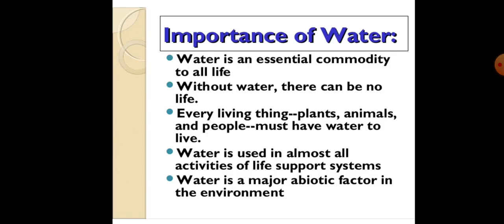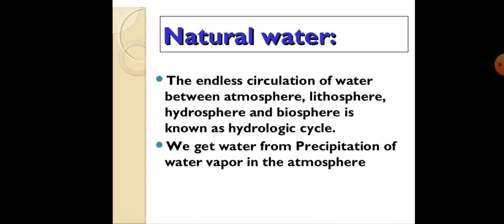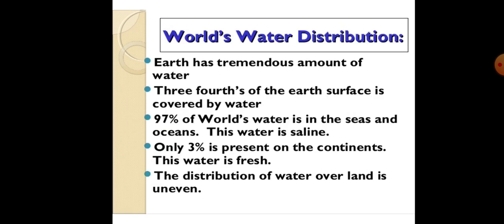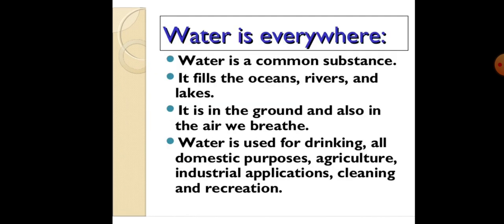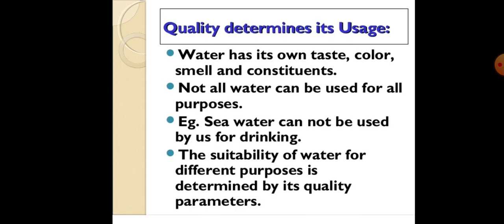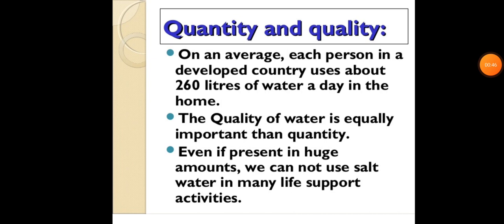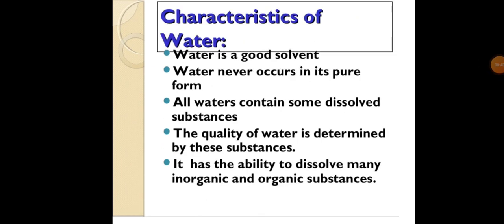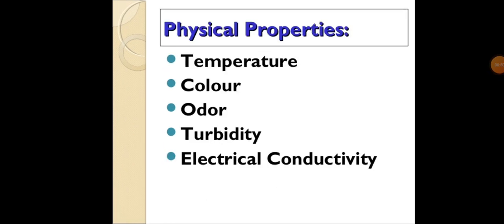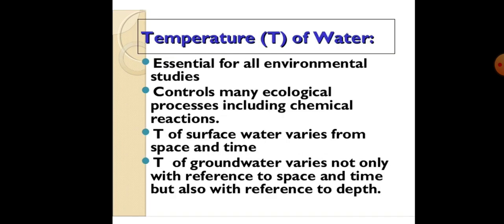In this first lecture we will discuss the importance of water, natural water, world water distribution. Water is everywhere — quality determines its usage. We will cover quantity and quality, then characteristics of water: water quality parameters, their physical properties including temperature, color, odor, turbidity and electrical conductivity.